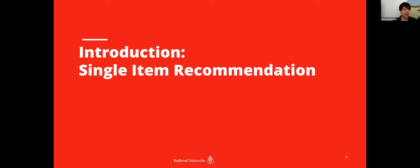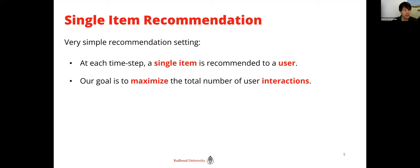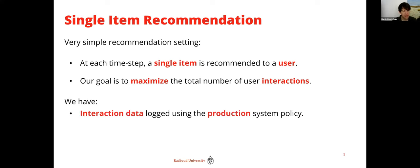I'm going to start with a very simple setting that has nothing to do with ranking — we're just recommending single items. An action here looks like recommending a single item. At each time step, we have a user and we can show them one item, and our goal is to maximize the total number of user interactions. An interaction is something positive like watching a video, buying a product, giving a like, or reading something. But we only have interaction data logged from a production system policy, and we want to use that data to find the best policy for the future.